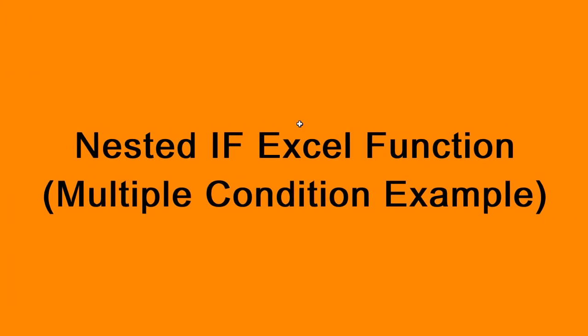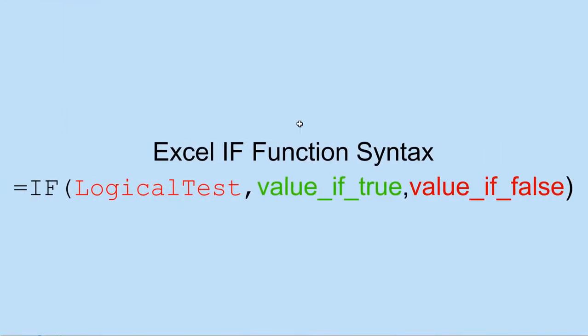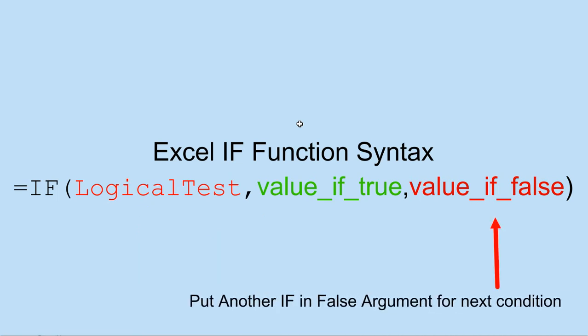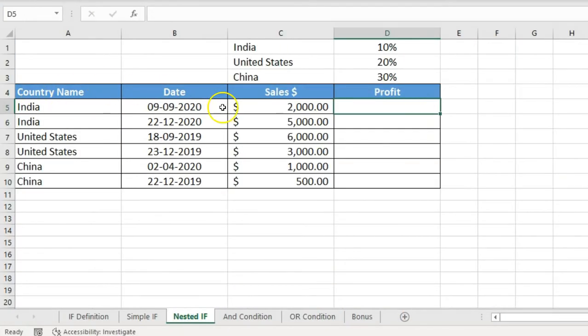That is how you can perform calculations with the IF function. Now let's understand how you can use nested IF. In a nested IF, if the logical test is false, instead of a final output you run another IF function — another condition, another logical test — to get a further output. You can use multiple IF functions within IF functions in the arguments.